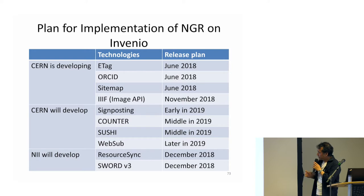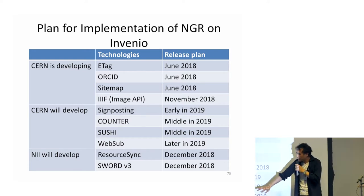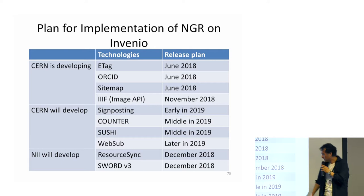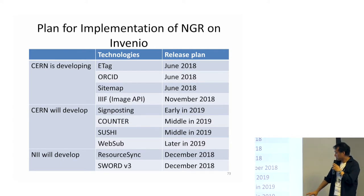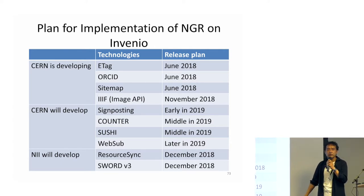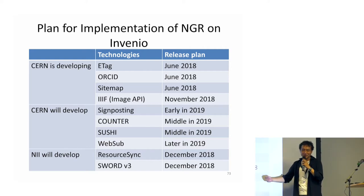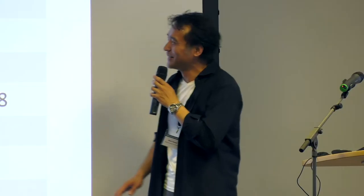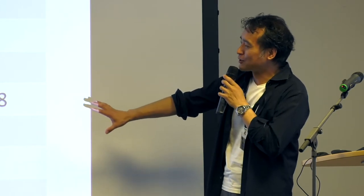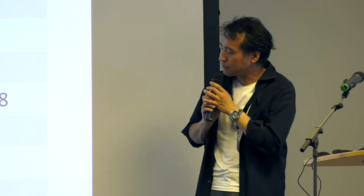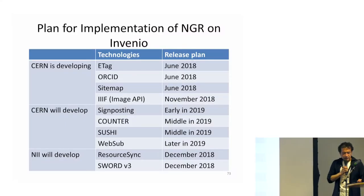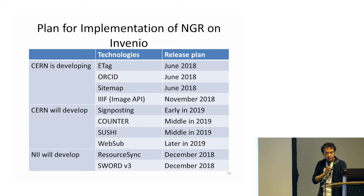In the case of NII, we will implement ResourceSync and OAI-PMH by the end of this year. So OpenAIRE may be waiting for ResourceSync from Zenodo — please wait a little while, we will implement it as soon as possible. The CELL team is also working on developing signposting, COUNTER, SUSHI, and WebSub. WebSub is a very interesting standard and we expect interesting use cases from CELL.